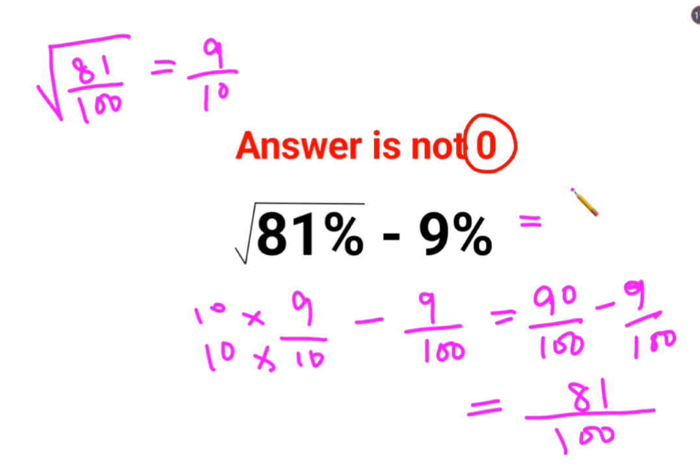So the answer for this one is 81 upon 100, or you can even write this as 0.81.